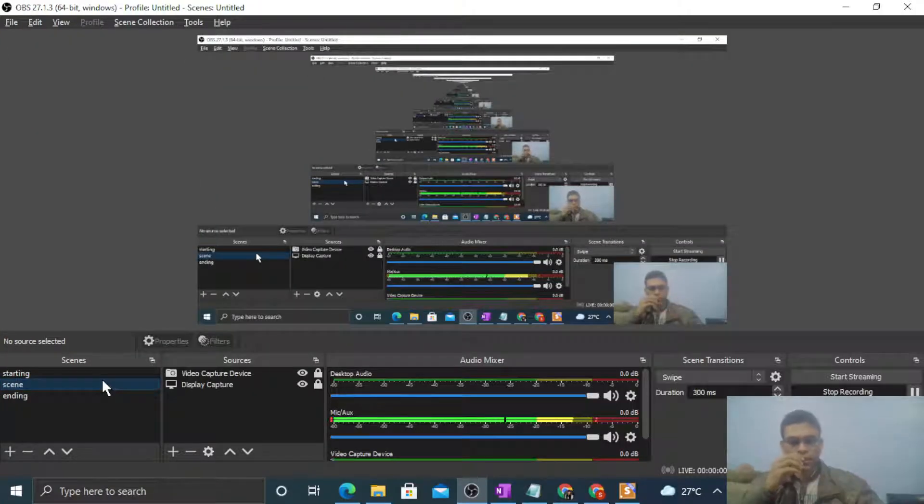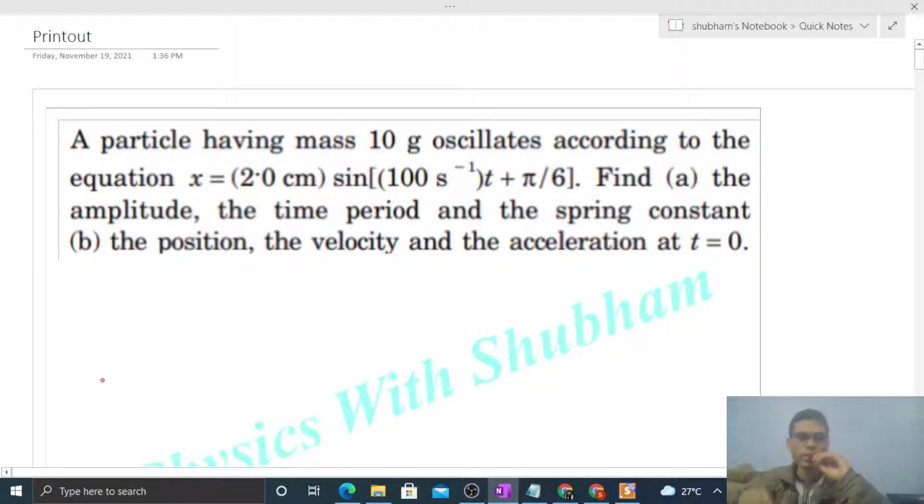Okay, hi everyone. So today let's discuss one interesting problem. It says a particle having mass 10 grams oscillates according to the equation x = (2.0 cm) sin[(100 s⁻¹)t + π/6]. Find the amplitude, the time period, and the spring constant.